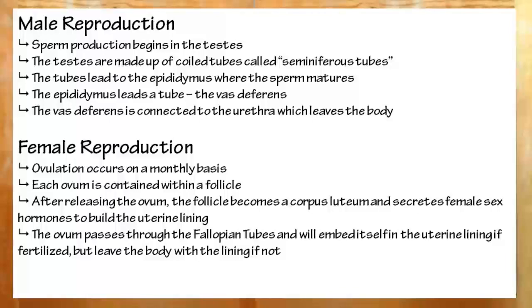In the female reproductive system, we can look at ovulation. Here, an ovum leaves a follicle. The follicle will become a corpus luteum, which will help release female sex hormones to develop the uterine lining, which will help nourish a developing child if one happens to occur. The ovum will travel through the fallopian tubes into the uterus, where it will embed itself in the uterine lining if fertilized. Otherwise, it will die, and the uterine lining will be shed through the cervix and through the vagina of the body. And that's it for ovulation.